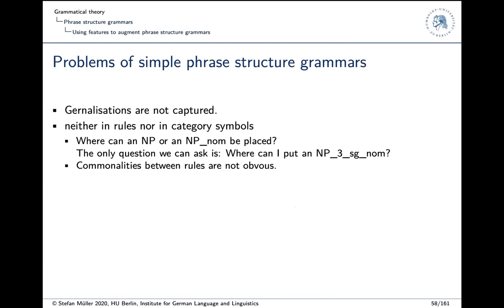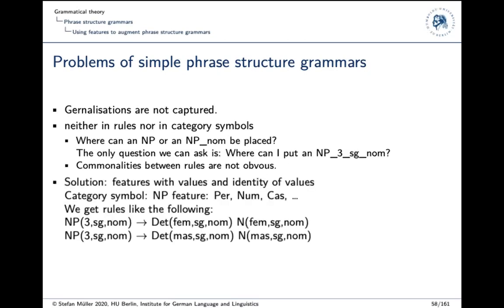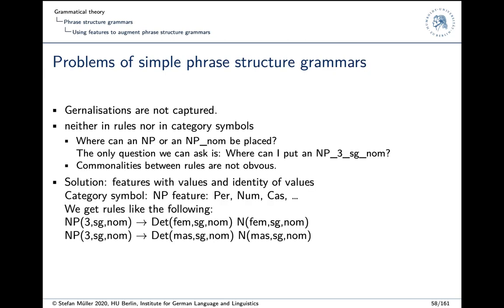So generalizations are not captured. So we cannot say where can an NP be placed because we cannot talk about NPs. I mean, we as humans see that there's NP in this complex symbol, but from a formal point of view, it's just NP with something. So the two NPs don't have anything in common if they differ in case and number or something. The commonalities between the rules are not obvious.